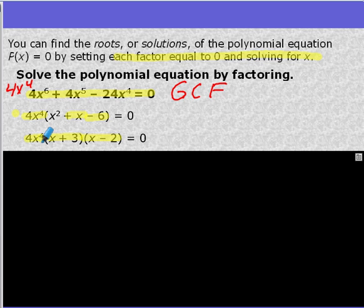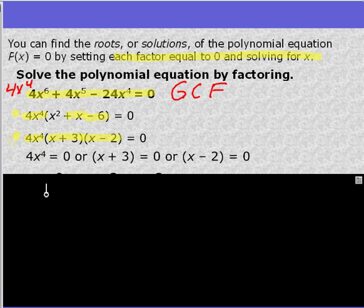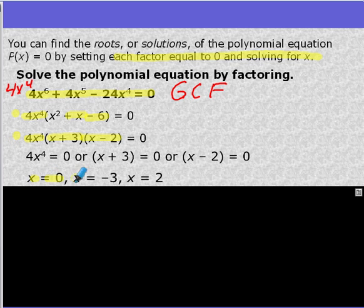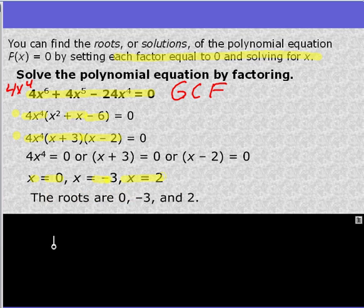Now we're going to set all of these factors equal to 0. Don't forget about the 4x to the fourth. That's also a factor. Set them equal to 0. Solve for x. That's going to give us x equals 0, x equals negative 3, and x equals 2 as our roots. So that final answer is roots are 0, negative 3, and 2.